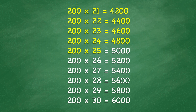200 times 25 equals 5,000. 200 times 26 equals 5,200. 200 times 27 equals 5,200. 200 times 28 equals 5,600. 200 times 29 equals 5,800. 200 times 30 equals...